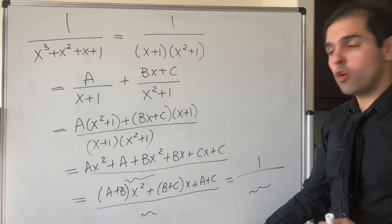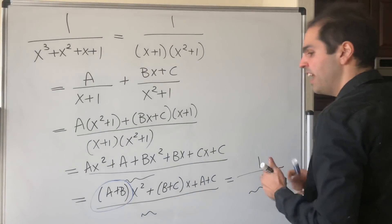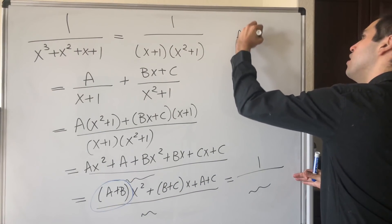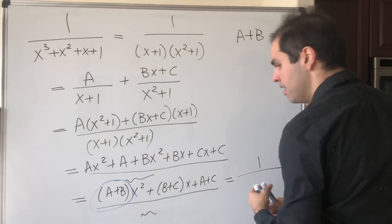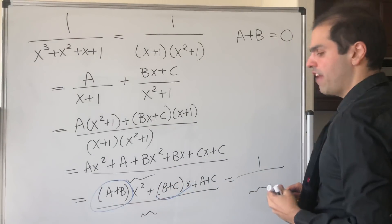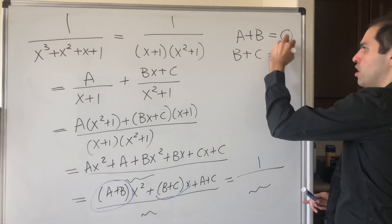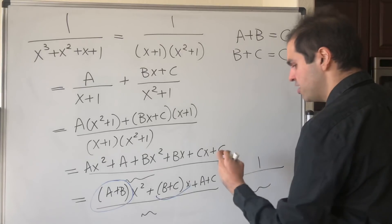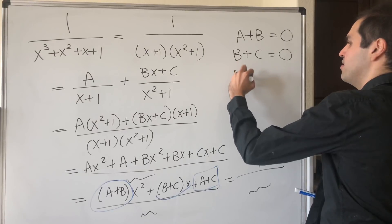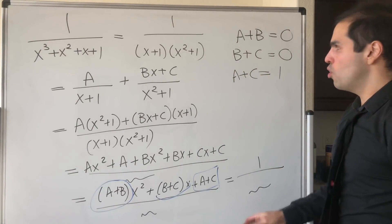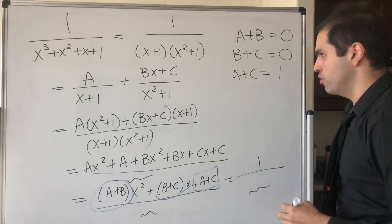In particular, comparing the coefficients of x squared, what you get is A plus B — there's no x squared on the right-hand side, so it equals zero. The coefficient of x is B plus C, and again there's none on the right, so zero. And last but not least, the constant coefficient is A plus C, and that equals one.